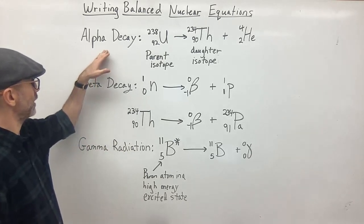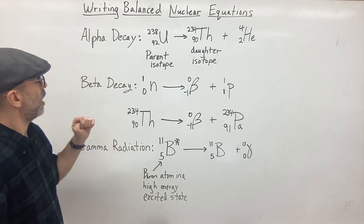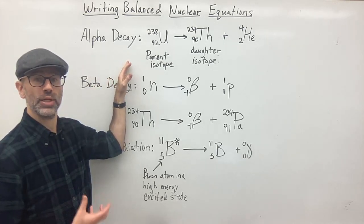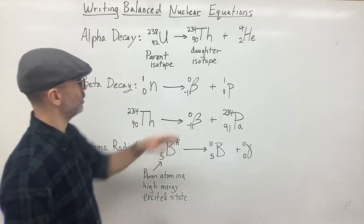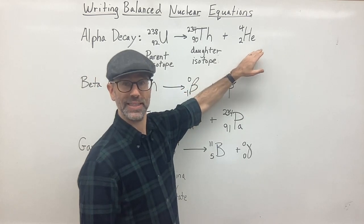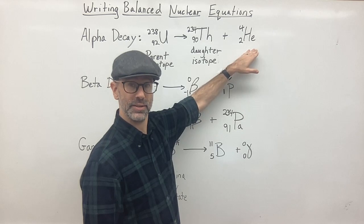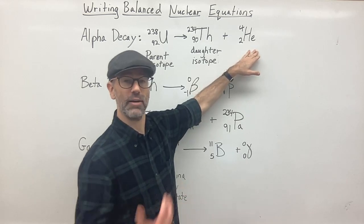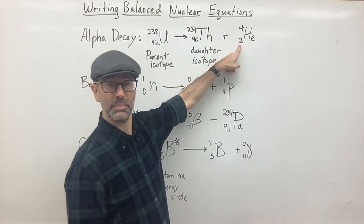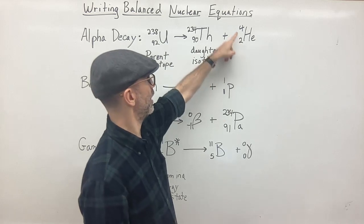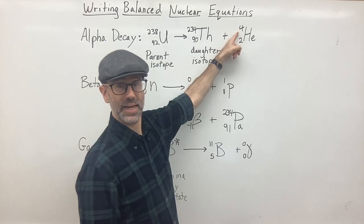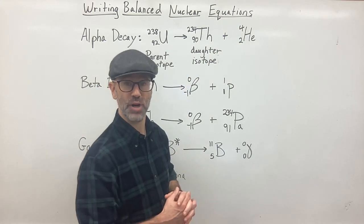So for alpha decay, that is going to be the release of an alpha particle. The alpha particle is a helium nucleus — basically a helium atom without any electrons. It's got two protons, so the bottom number is two, and it's got a mass number of four, which means it has two protons and two neutrons.